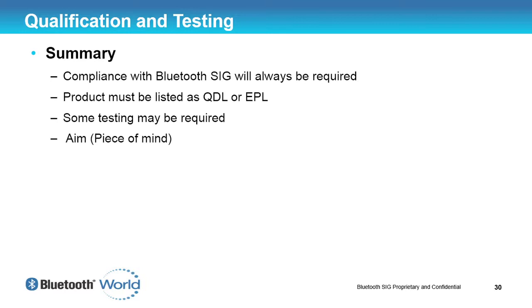You'll always need compliance with the Bluetooth qualification requirements. You may not have to do qualification testing if incorporating subsystems, but you still have to meet the requirements. Your product has to be listed as either a QDL if it's a unique Bluetooth design, or an EPL if it's a combination of subsystems. Some testing may be required. If you're doing a new design, it's more than likely you would have to do some qualification testing.